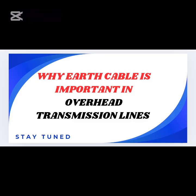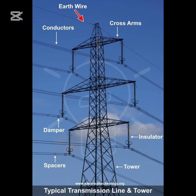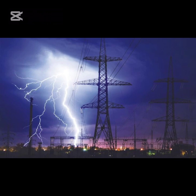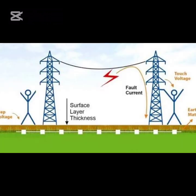Second question: Why is earth cable important in overhead transmission lines? Earth cables play a crucial role in ensuring the safety and reliability of overhead transmission lines. Here's a detailed explanation of their seven key purposes. 1. Lightning protection. Earth cables are designed to attract lightning strikes, directing the massive electrical discharge harmlessly into the ground. This protects the power lines, equipment, and people from the devastating effects of lightning strikes.